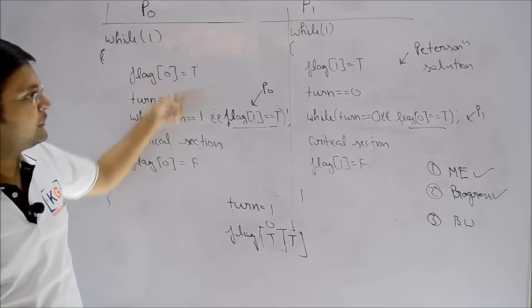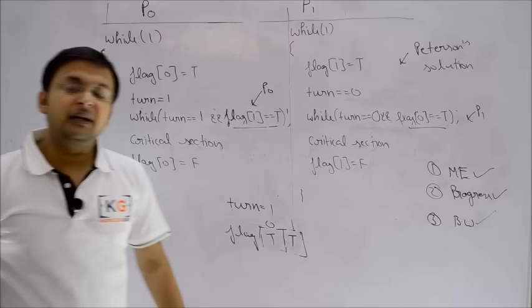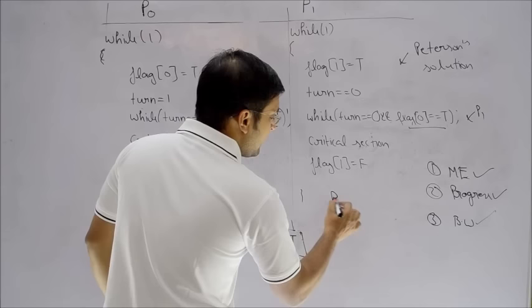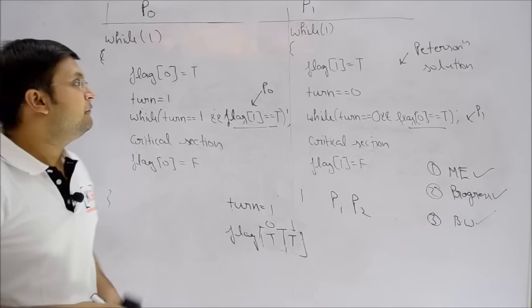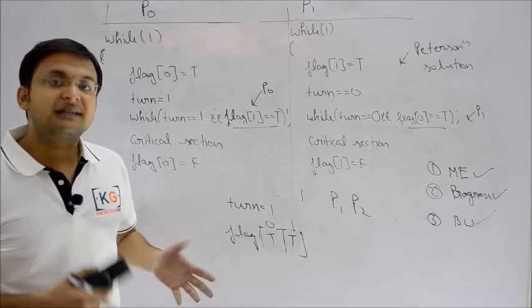So P1 has to wait at most one round before getting into the critical section. Once a process exits, the other process that has already made a request will get to enter — it cannot be skipped again. Therefore, Peterson's algorithm satisfies all three criteria: mutual exclusion, progress, and bounded waiting. Although bounded waiting was an optional criterion, Peterson's algorithm satisfies it too. However, this solution holds good only for two processes. In the next lectures, we'll understand how to handle N processes using semaphores.